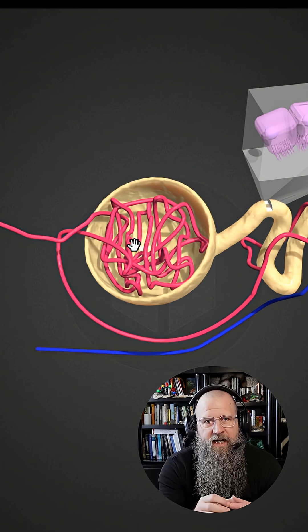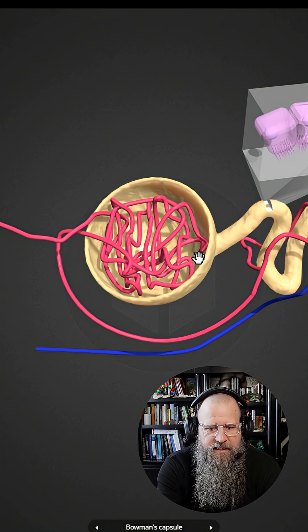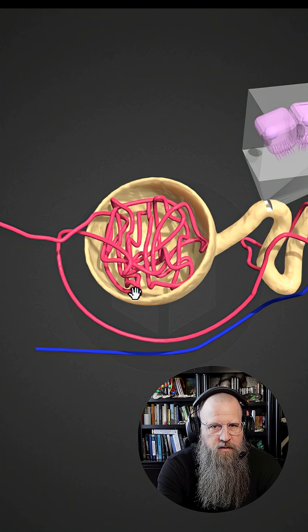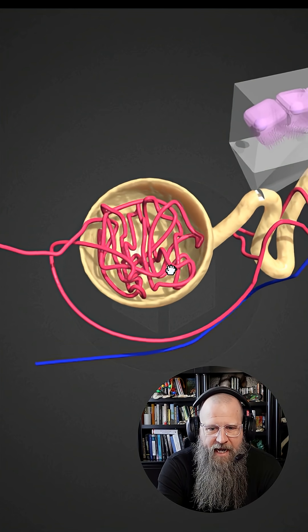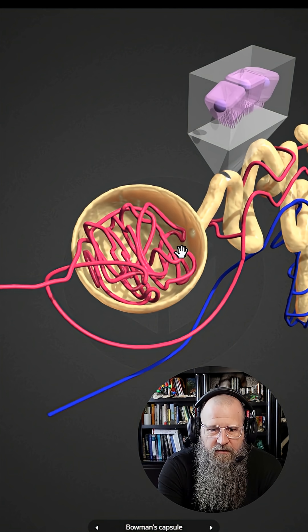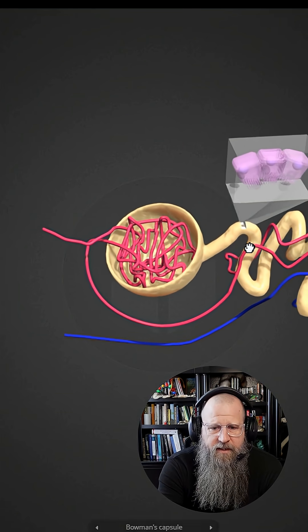So the blood's going to come in, it's going to get filtered out and what's filtered out ends up in this space in here inside of this little cup, which is known as Bowman's capsule. Some people call it the glomerular capsule. So material moves from Bowman's capsule through this little tube into this open duct here.